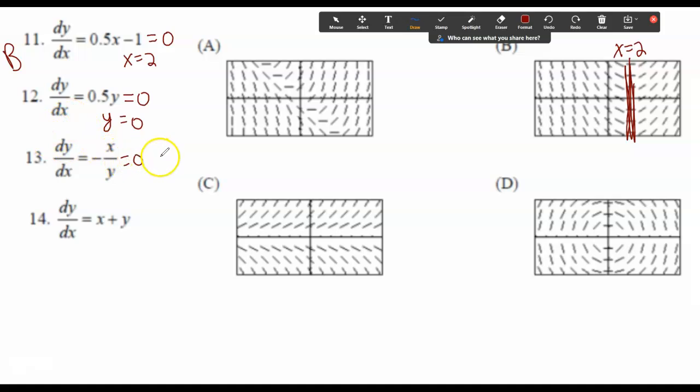So this equals 0 when x equals 0 and y equals 0. So this looks like a d option. So I have zeros here and here. So this is going to be d.